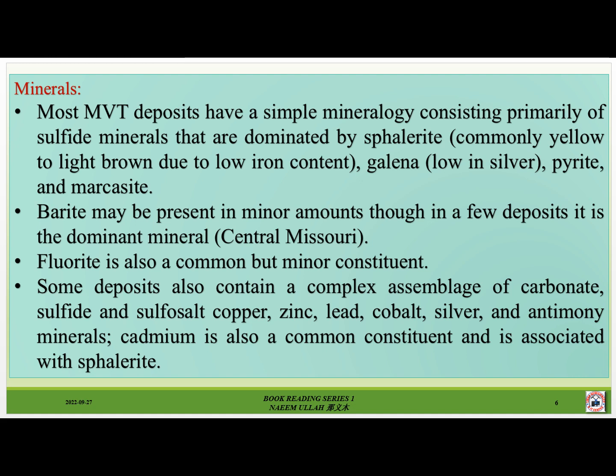Most MVT deposits have a simple mineralogy consisting primarily of sulfide minerals dominated by sphalerite — commonly yellow to light brown due to low iron content — galena low in silver, pyrite, and marcasite. Barite may be present in minor amounts, though in a few deposits such as central Missouri it is the dominant mineral. Fluorite is also a common but minor constituent. Some deposits also contain a complex assemblage of carbonate, sulfide, and sulfosalt minerals including copper, zinc, lead, cobalt, silver, and antimony minerals.